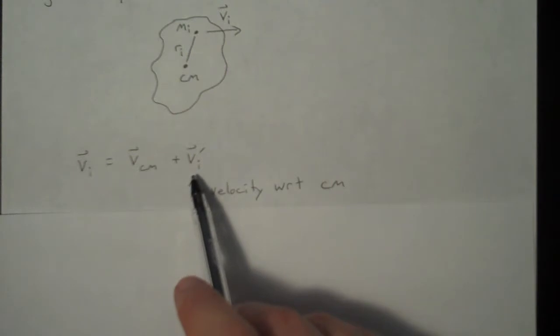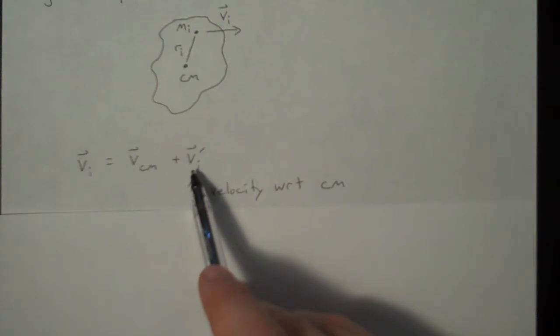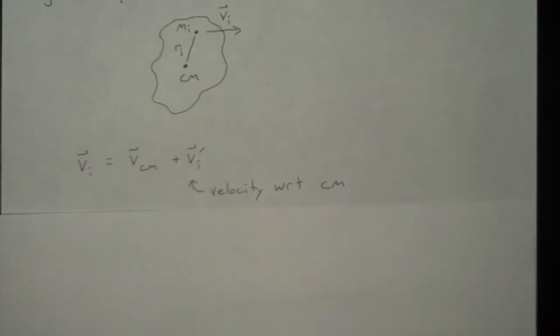So this is really that addition of velocities that we had in one of the earlier lessons, where you have to add up. So this would be the velocity of the center of mass with respect to the ground. This is the velocity of the point with respect to the center of mass. So you have to add those two up.